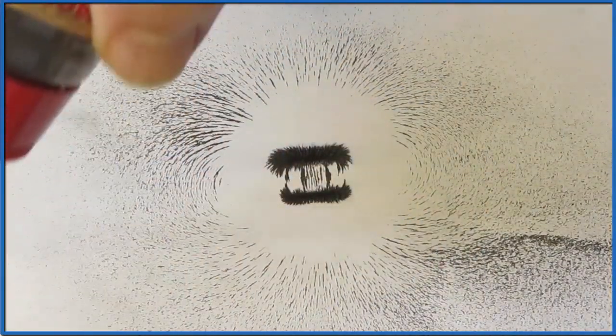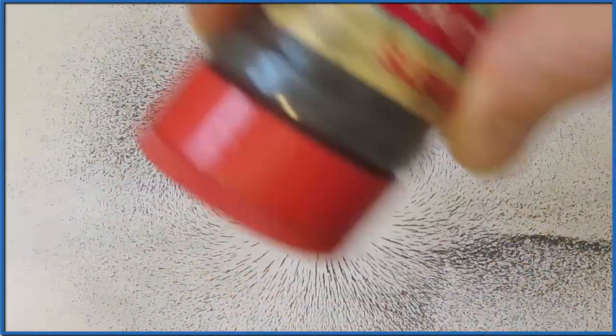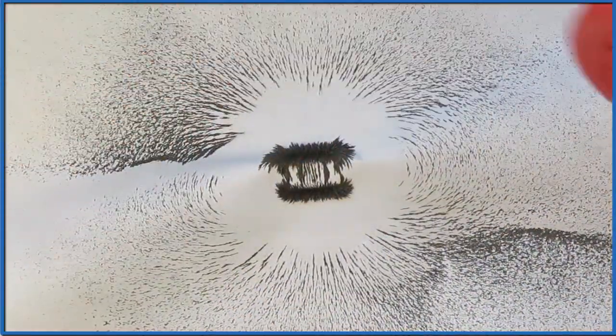They're starting to kind of evolve, and you see them there on the paper. This is another way that we can visualize the lines of force around a magnet.